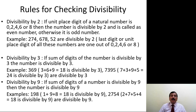Divisibility by 3: if the sum of the digits of a number is divisible by 3, then the number is divisible by 3. Consider 369 — one way is to actually divide it, but that is time-consuming. Instead, add the digits: 3 + 6 + 9 = 18, and 18 is divisible by 3. So without actually dividing 369, we can conclude it is divisible by 3, and therefore it is not prime.